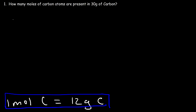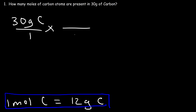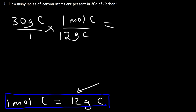Let's start with what we're given: 30 grams of carbon. What unit should we put on the bottom? Notice that we have grams of carbon on the top left, so we need grams of carbon on the bottom right, and the number in front of it is 12. So for every 12 grams of carbon, there's one mole of carbon. We want to set this up so the unit grams of carbon cancels, so here we need to divide.